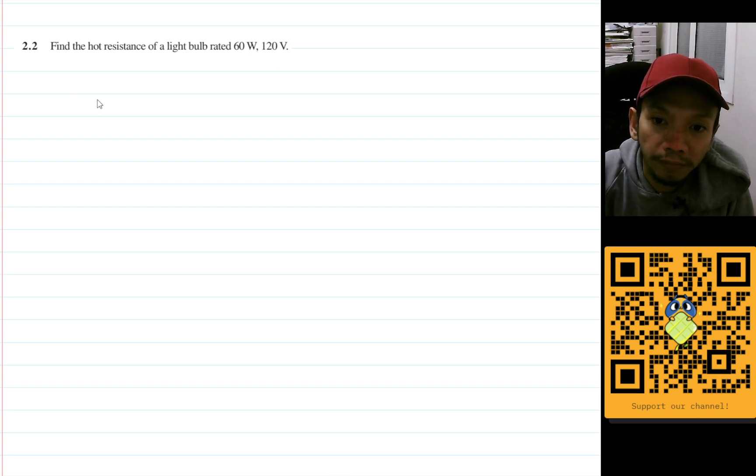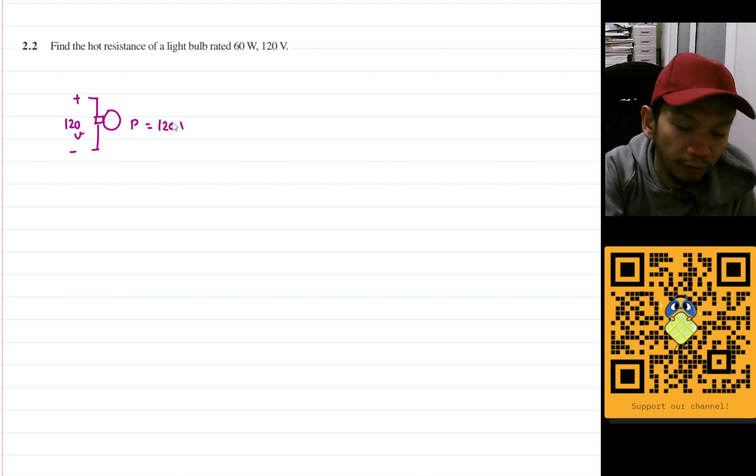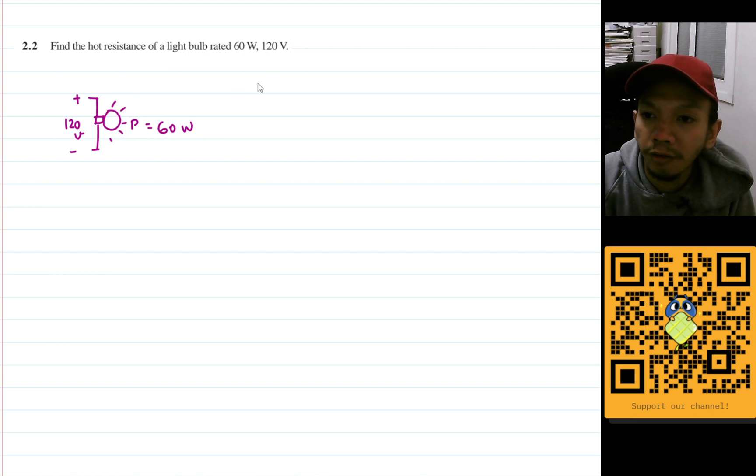We have a bulb here like this, and when we get a voltage across it, we have 120 volts. The power here will be 60 watts, and this will be like that. Okay, remember...